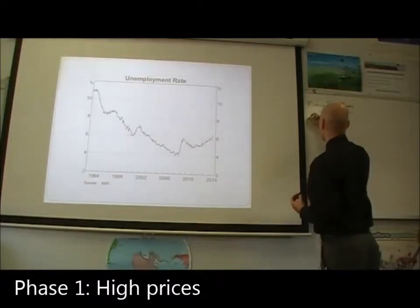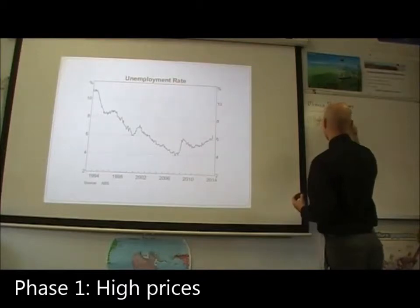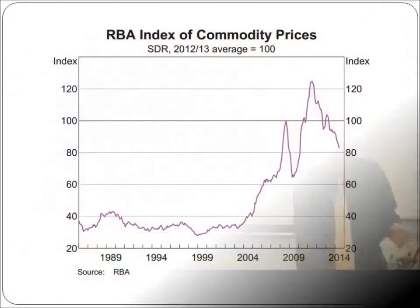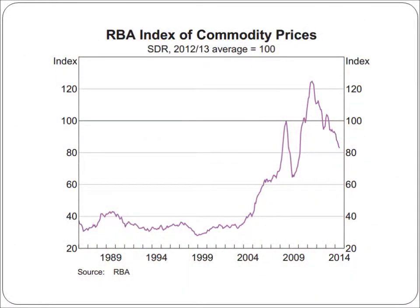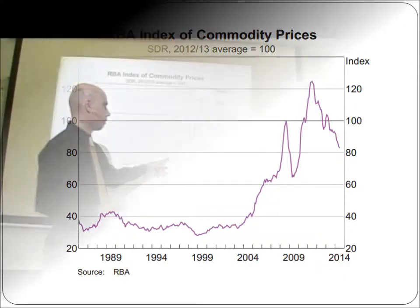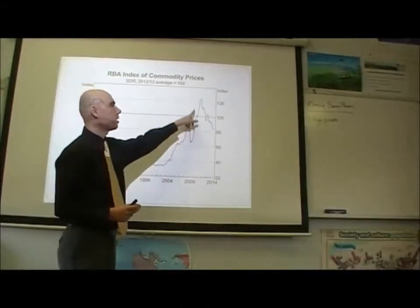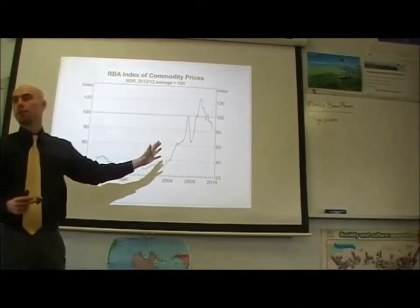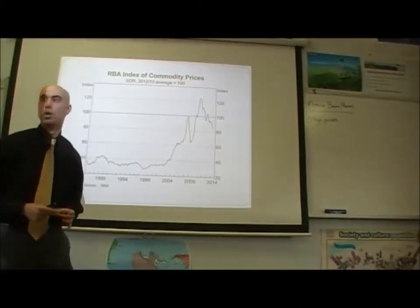Phase one was high prices. Looking at the RBA index of commodity prices, when did prices start to increase? Around 2004-2005. You saw a big increase in prices. So phase one: prices start to increase.